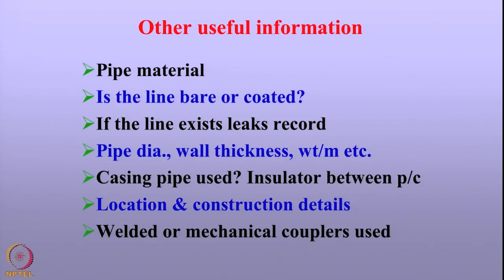Other useful information required includes the nature of the material, whether cast iron or various API grade steels, and whether the pipeline is coated or bare. For old pipelines, leak records are important. Dimensional data such as pipe diameter, wall thickness, and weight per unit length are needed. It is also important to know whether buried pipelines are encased in casings and whether insulators are present between those casings.